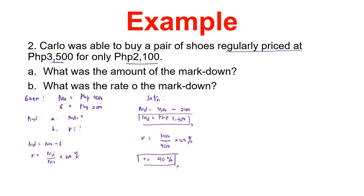To counter-check the answer: since the base of the markdown rate is the cost price, get the product of the cost price and the rate — the result should be the markdown. Cost price 3,500 times 40 percent (0.40) equals 1,400, which confirms our markdown. So 40 percent of the cost price is 1,400.